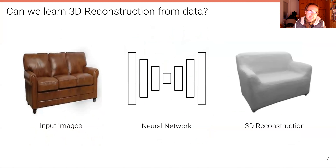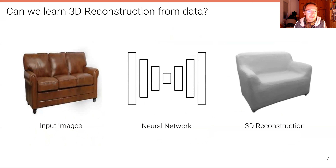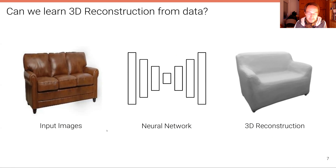The most basic setting we could address is one where we have a machine learning model, typically a neural network, which takes as input a single image and outputs a 3D reconstruction. This is, of course, a very hard problem, but it's a prototypical problem. We're going to discuss it because it demonstrates how much we can do with machine learning — how much geometry we can infer by learning from a lot of data, while at test time we are only seeing a single image.